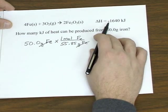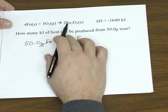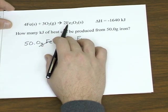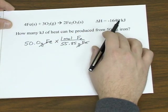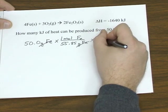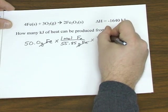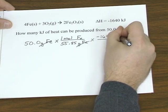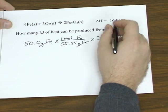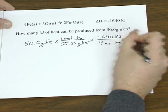So in other words, it's a negative, so that's exothermic. So you have 4 moles of iron, 3 moles of oxygen, produce 2 moles of iron 3 oxide, and 1,640 kilojoules of heat. So that means we got 1,640 kilojoules of heat for every 4 moles of iron.